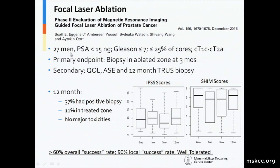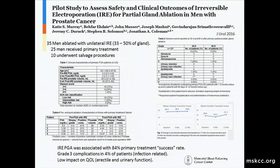Scott Eggener's focal laser ablation trial looked at very small, discrete lesions identified only on MRI — you had to have an MRI-identifiable lesion to be treated. The primary endpoint was absence of cancer in the ablated area at three months. They demonstrated an overall 60 percent success rate with 90 percent local success in the treated area, again with excellent quality-of-life outcomes. These are the numbers you'll keep seeing in highly selected patients — outcomes in the 70 to 80 percent range. Our group with IRE treated 35 men initially and have since added an additional 50 men — over 80 men treated in total — with excellent urinary function outcomes, 84 percent primary success rate, grade 3 complications being rare, and very low quality-of-life impact.